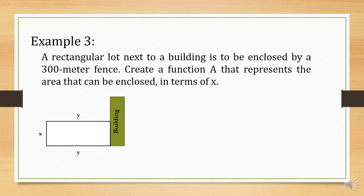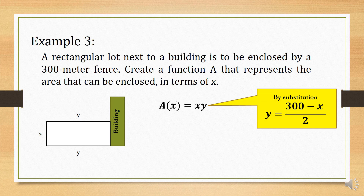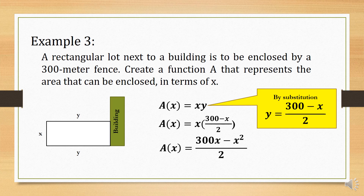Now, going back — since we are creating a function A that represents the area in terms of x, and A of x is equal to x times y, we now substitute the value of y. So A of x is equal to x times the quantity 300 minus x all over 2. Simplifying the right side, we have 300x minus x squared all over 2. So the area with respect to x is equal to 300x minus x squared, all over 2.